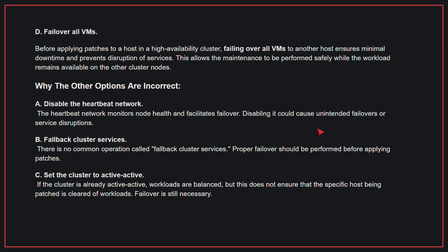Why the other options are incorrect? A, disable the heartbeat network: the heartbeat network monitors node health and facilitates failover; disabling it could cause unintended failovers or service disruptions. B, fallback cluster services: there is no common operation called fallback cluster services; proper failover should be performed before applying patches. C, set the cluster to active-active: if the cluster is already active-active, workloads are balanced, but this does not ensure the specific host being patched is cleared of workloads — failover is still necessary. Therefore, the correct answer is D, fail over all VMs.